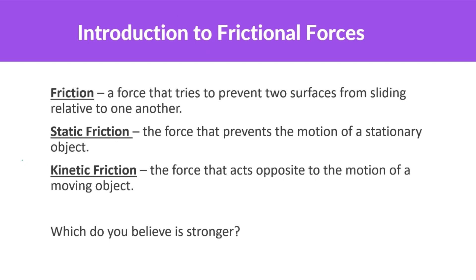So static friction — what does that mean? It's the force that prevents the motion of a stationary object. Think of something like a large cabinet. You're this little person trying to push on this large cabinet, and even though you push and push on it, it doesn't move. That is because of static friction. When something is essentially not moving, even though a force is trying to get it to move, static friction is acting on it.